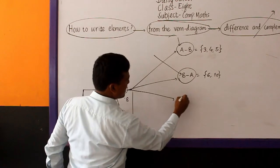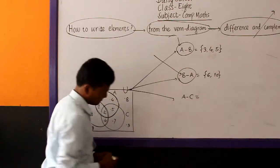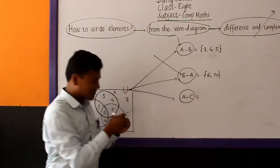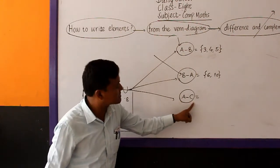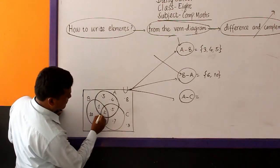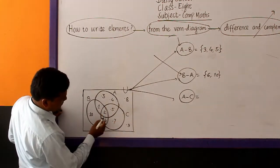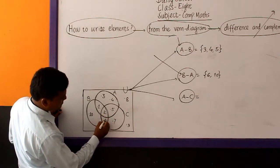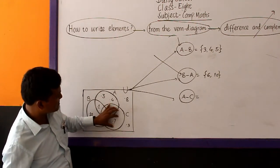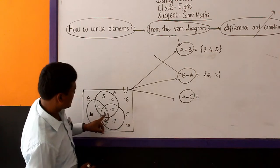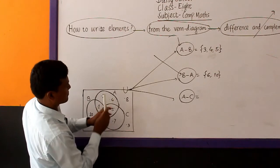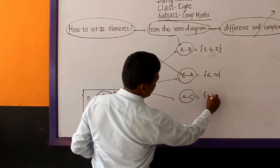Similarly, let us take one more. If we have to write the elements of A difference C — that means elements of A only, not of C. Not of C means don't write the elements which lie inside C. 2, 5, 6, 7 are the elements of C — these cannot be written. The remaining elements of set A are 1, 3 and 4. So A difference C is 1, 3 and 4.